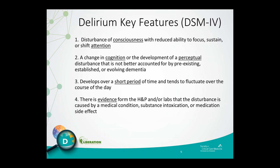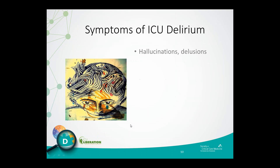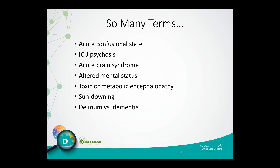One of the major challenges affecting effective delirium assessment, prevention, and management in the ICU setting is all the different terms that have been used to describe the syndrome. For example, it's common to see terms such as acute confusional state, ICU psychosis, acute brain syndrome, encephalopathy, sundowning, and the just-ain't-right syndrome — a term taught to me by one of my mentors when I was first starting as a SICU nurse.